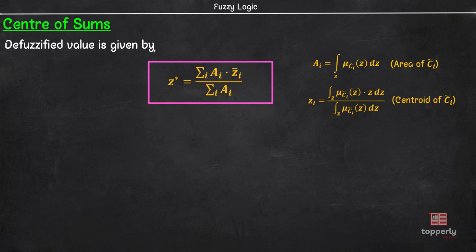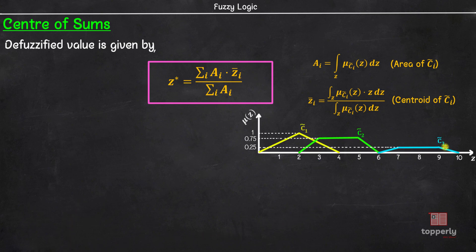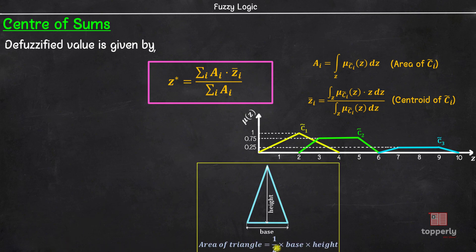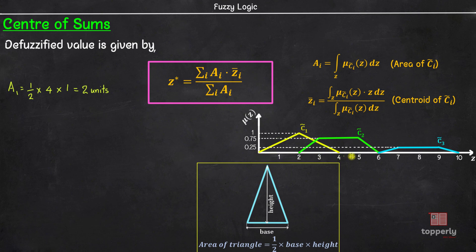As an example, consider three output fuzzy sets C1, C2 and C3. We can see that C1 is an isosceles triangle and we know that the area of a triangle is given by half into base into height. So the area of C1, which is A1, is given by half into base, which is 4 units, into height of the triangle, which is 1, and this is equal to 2 units. Due to symmetry of C1, we can easily find the geometric center along the Z axis as 2. Therefore, Z-bar of C1 is equal to 2.